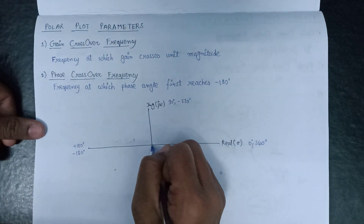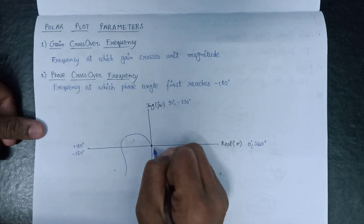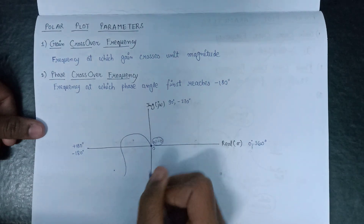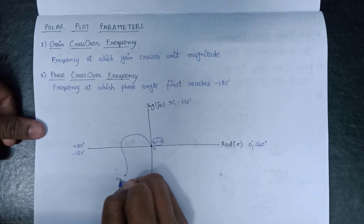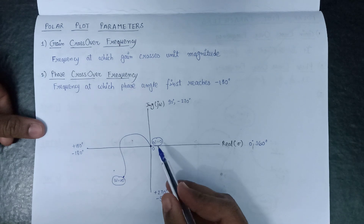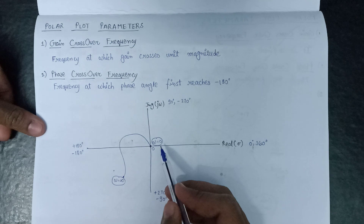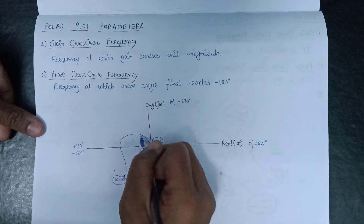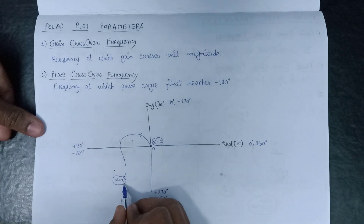Let us assume this is our polar plot. The polar plot will start from the origin at the frequency omega equals to zero and it ends at omega equals to infinity. Since the value of omega always lies between zero to infinity, the polar plot always starts at omega equals zero and always ends at omega equals infinity.